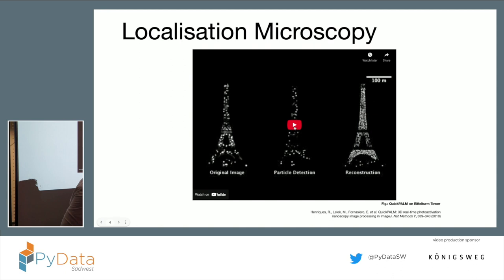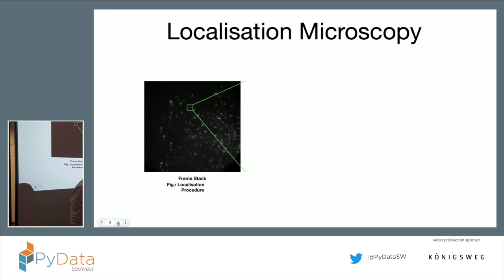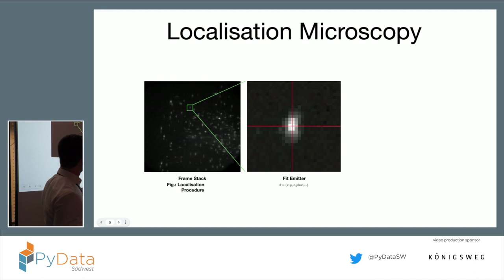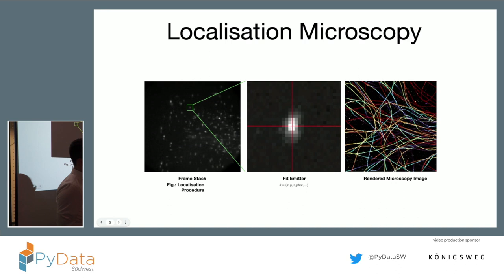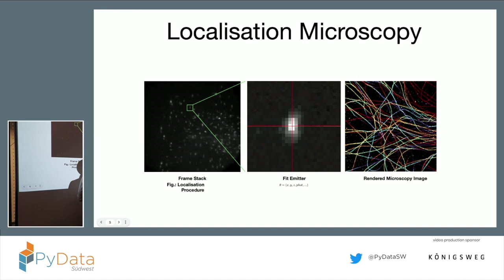That's basically the trick applied in localization microscopy. What you do is acquire a stack of frames, then fit each of those blinking events to a model function — in the simplest case a Gaussian. Then you extract the position, the brightness, and so on. You put this into the renderer and get one of those beautiful rendered microscopy images. The precision of the final result is much, much better than the extent of the spot in the first place — and that is basically how you get around this physical limit.